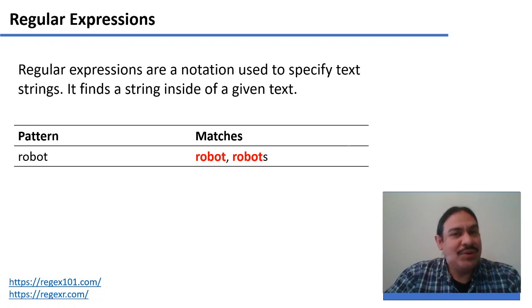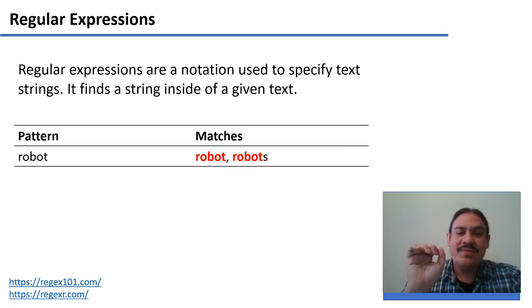The computer is very literal about it. If you give it the pattern R-O-B-O-T, as in robot, it's going to search for exactly that. For example, if you have the document robot comma robots, it's going to find the first word and then only a fragment of the second word. It's not going to give you the S because you did not specify it in your regular expression.